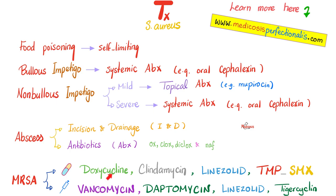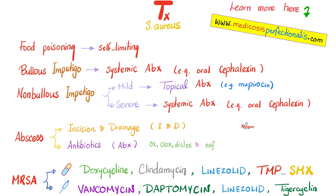For MSSA — the methicillin-sensitive variety — give oxacillin, cloxacillin, dicloxacillin, or nafcillin. They are methicillin-sensitive, but we don't give methicillin anymore; we give one of its alternatives.